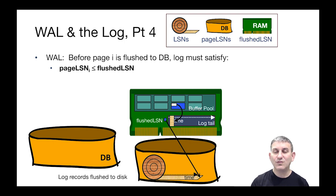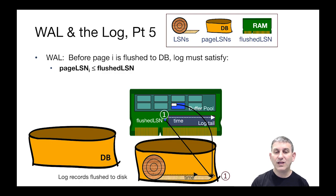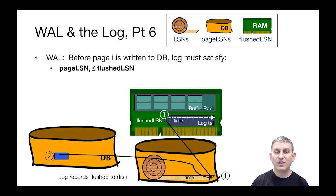Now let's go through the write-ahead logging protocol as reflected in this state. If we have some page I in the buffer pool, and it needs to be flushed to the database, we first have to ensure that the page LSN of I — the pointer to its log record — is less than or equal to the flushed LSN. That is to say, the log record for this page has already been flushed to disk. In this picture, the blue buffer page is pointing to an LSN still in the log tail, greater than the flushed LSN, so we can't write this blue page to disk yet. But as time goes on, we'll write that log tail to disk, and the page LSN will now point to an LSN on disk — it's less than or equal to the flushed LSN — and we can now flush that blue page to the database disk.